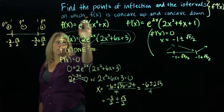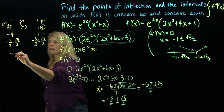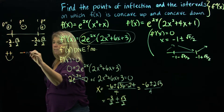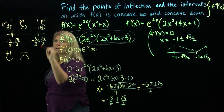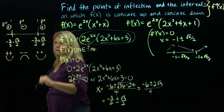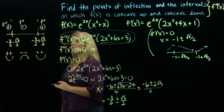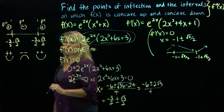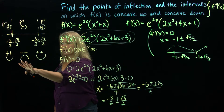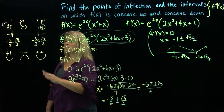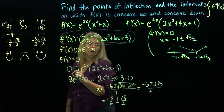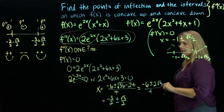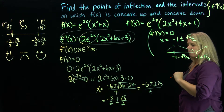This sign chart tells us about concavity and points of inflection. When the second derivative is positive, the graph is concave up. When the second derivative is negative, the graph is concave down. I like to use little happy and sad faces to remember: positive second derivative means concave up, negative means concave down. So I can now answer the questions about intervals of concavity and inflection points directly from this sign chart.